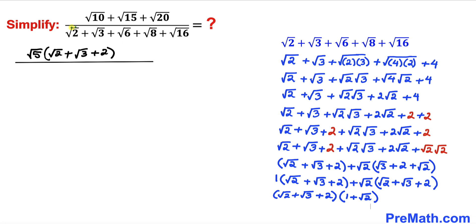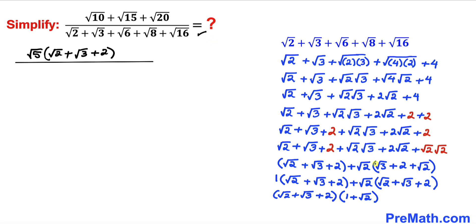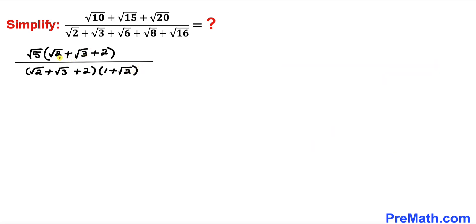The whole denominator has been simplified to (√2 + √3 + 2)(1 + √2). Replacing the denominator, I now see that the factor (√2 + √3 + 2) appears in both the numerator and denominator and they cancel each other out, leaving √5 divided by (1 + √2).